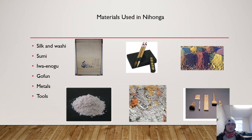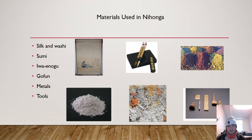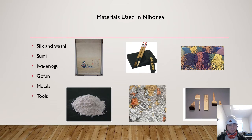Here are the materials used to make a real Nihonga painting. First is silk and washi, found at the top left of the page — this is what they use for their base, their canvas, to draw their paintings on. The next is sumi, an ink derived from animal bone mixed with glue, which helps it stick to the paper very well.